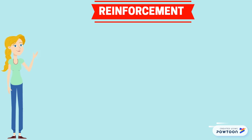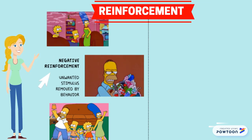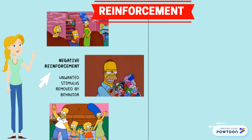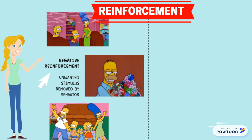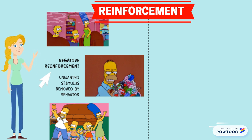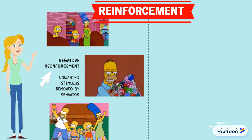Now let's take a look at some examples. An example for negative reinforcement: let's say that Homer never takes the rubbish out when it's his turn and it always creates a really bad smell around the house. Homer then decides to take the rubbish out starting from his next turn. As a result, Homer and his family no longer have to put up with the really bad smell of rubbish.